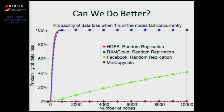For a 5,000-node cluster, which is a fairly normal HDFS cluster, with Facebook's approach you're going to lose data about 25% of the time when these events occur. That's okay, but can we do better? The main question we ask is: can we take that result and reduce it to close to zero while still maintaining the same recovery time? The answer is yes, and that scheme is called copy set replication.